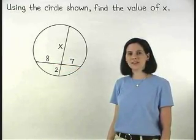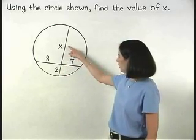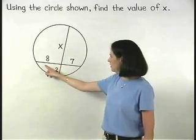In other words, we can set up the equation 2 times x equals 8 times 7.